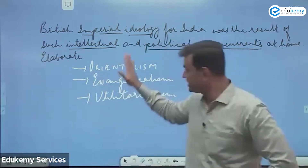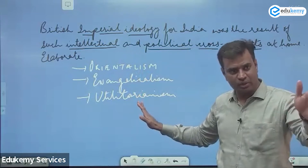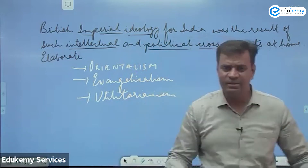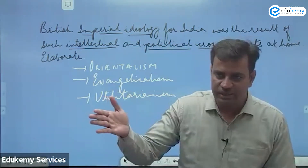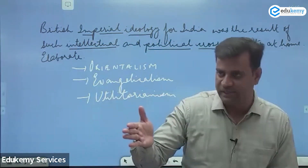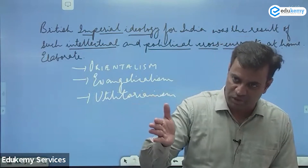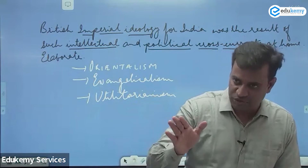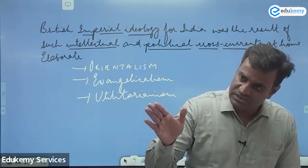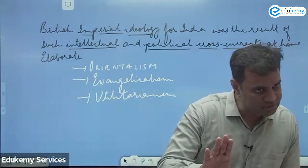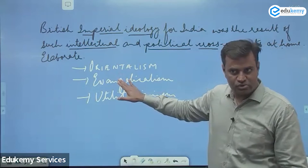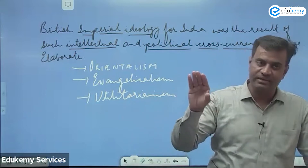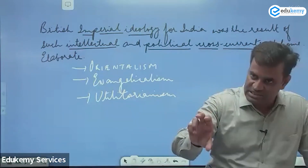All these are Utilitarian philosophy that justified colonial rule. If you understand these ideologies, all developments will easily come. The possible introduction for this question: 'British imperial ideology in India witnessed changes over a period of time suited to colonial interest' — first Orientalism, then Evangelicalism, then Utilitarianism. Different approaches, all suited to colonial interest.